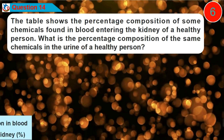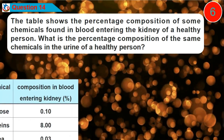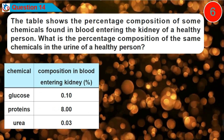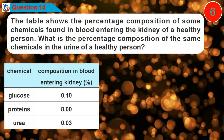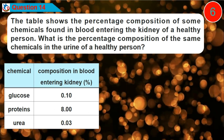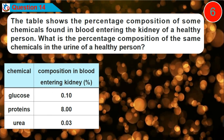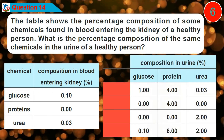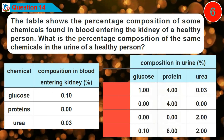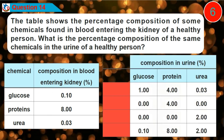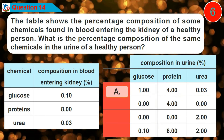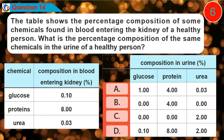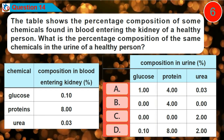Question 14. The table shows the percentage composition of some chemicals found in blood entering the kidney of a healthy person. Question 15. What is the percentage composition of the same chemicals in the urine of a healthy person? Is it option A, B, C, or D?